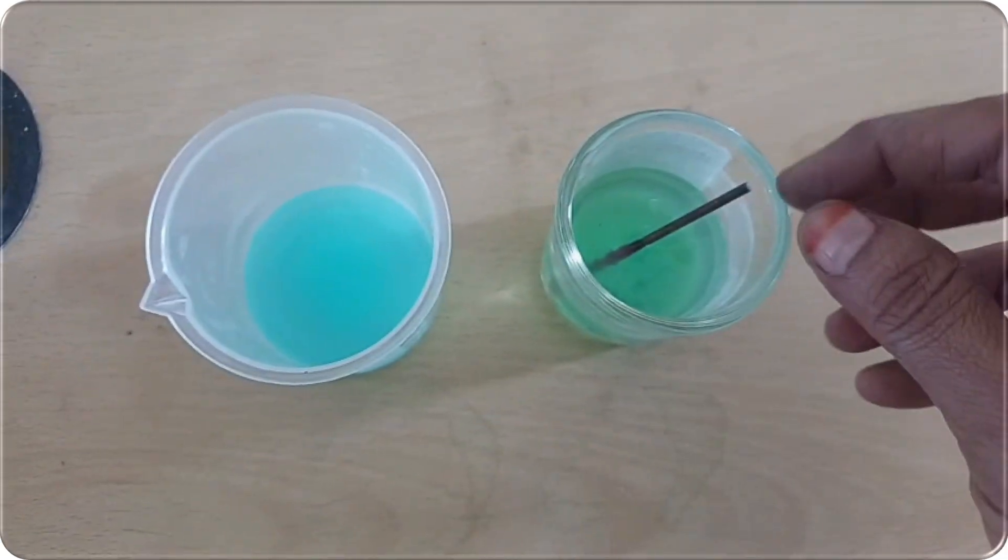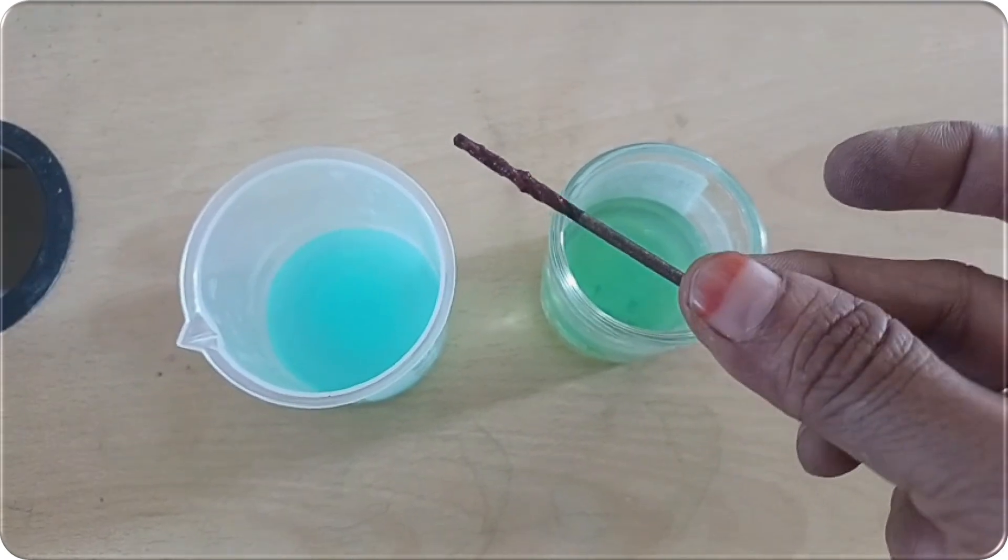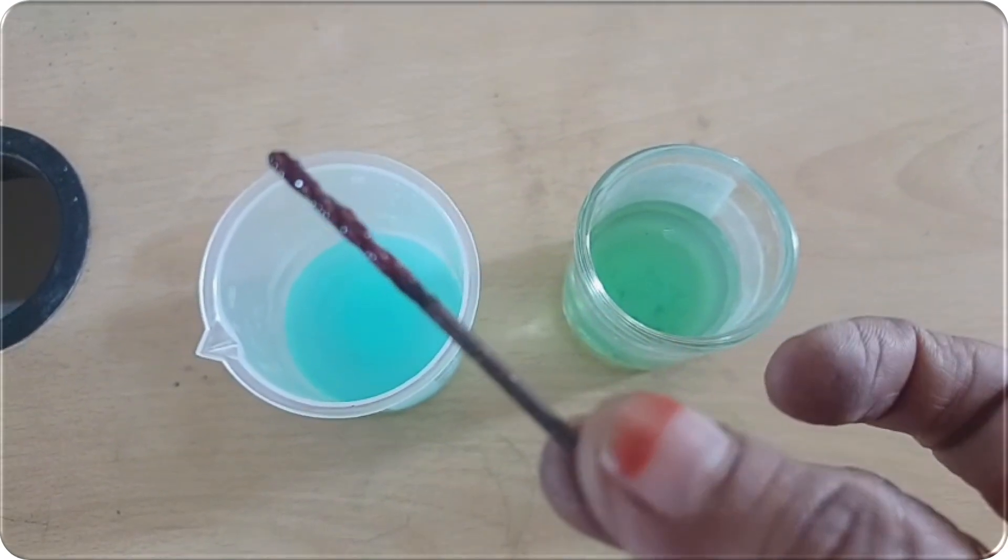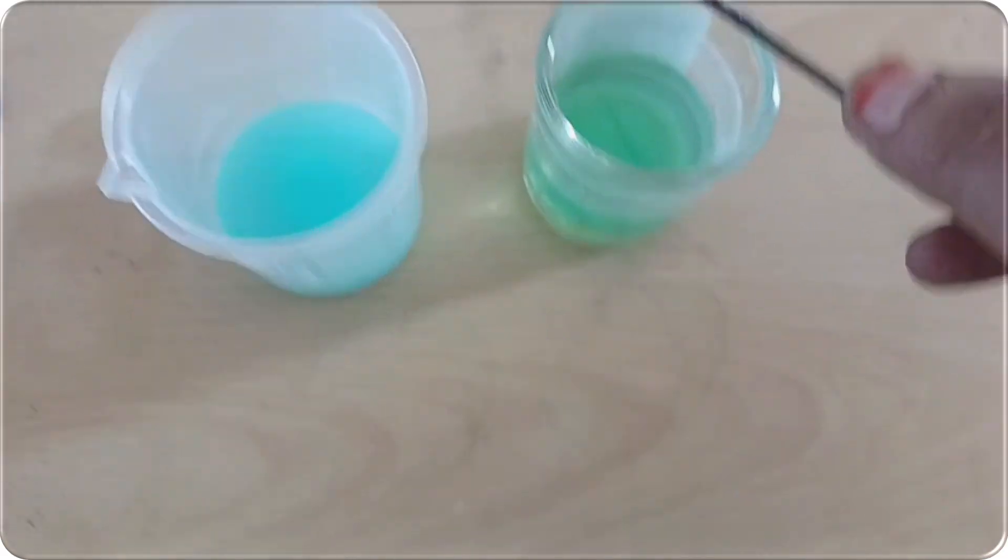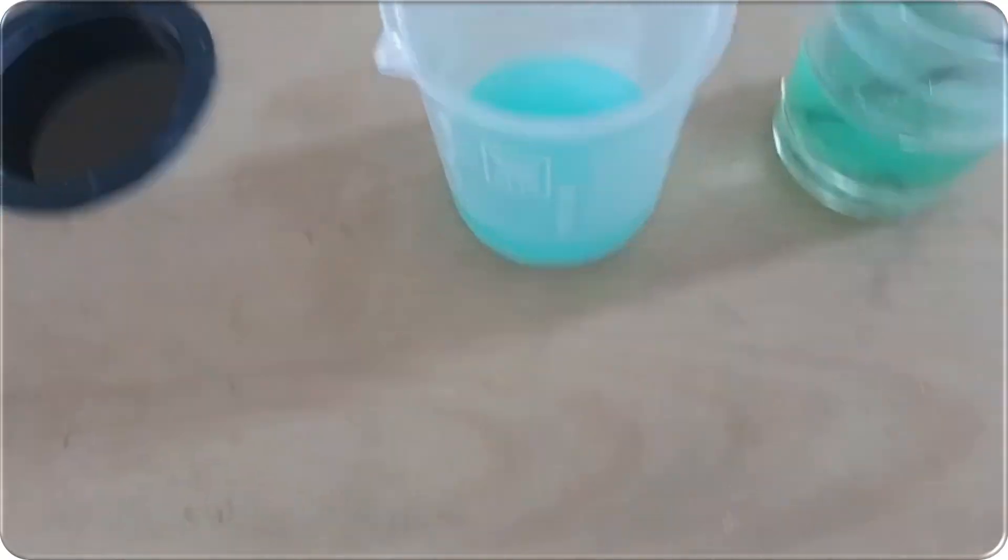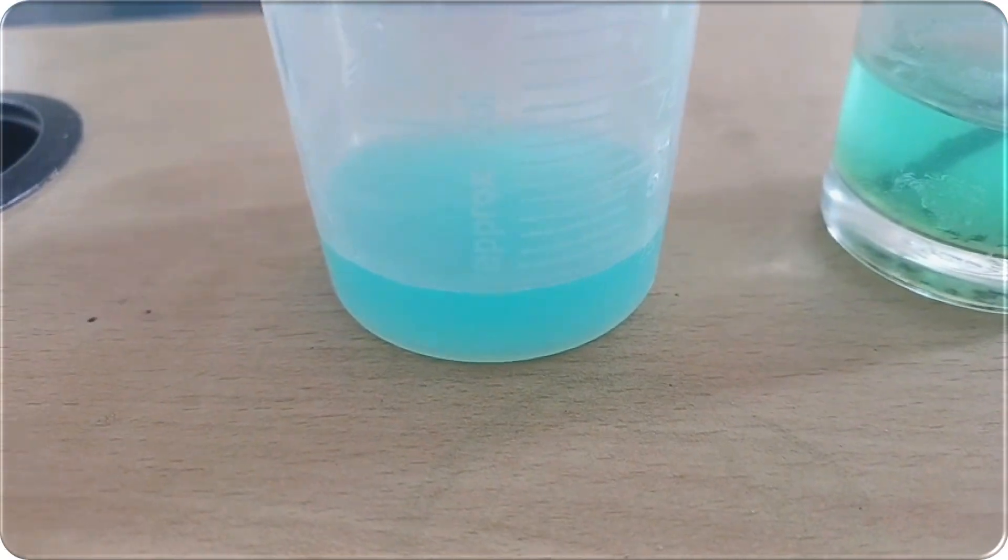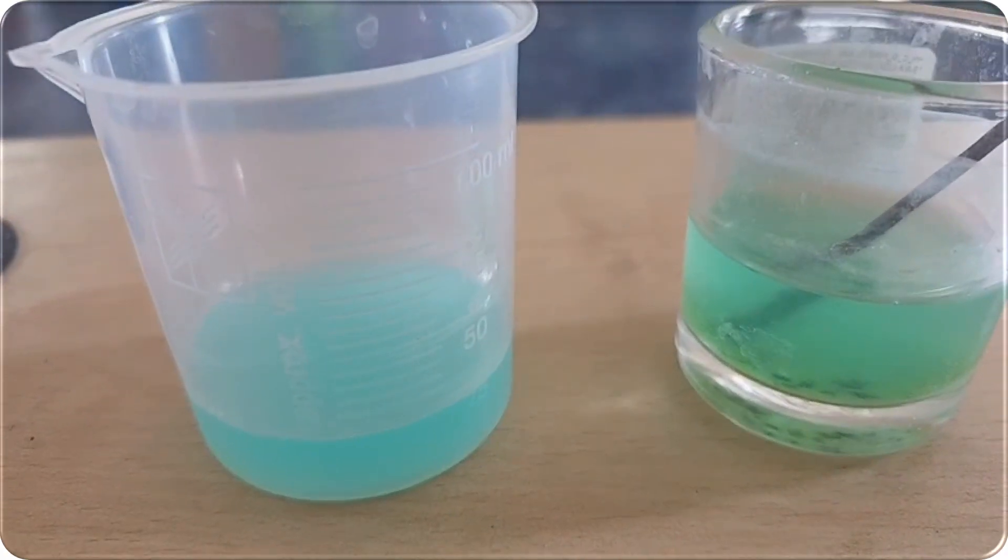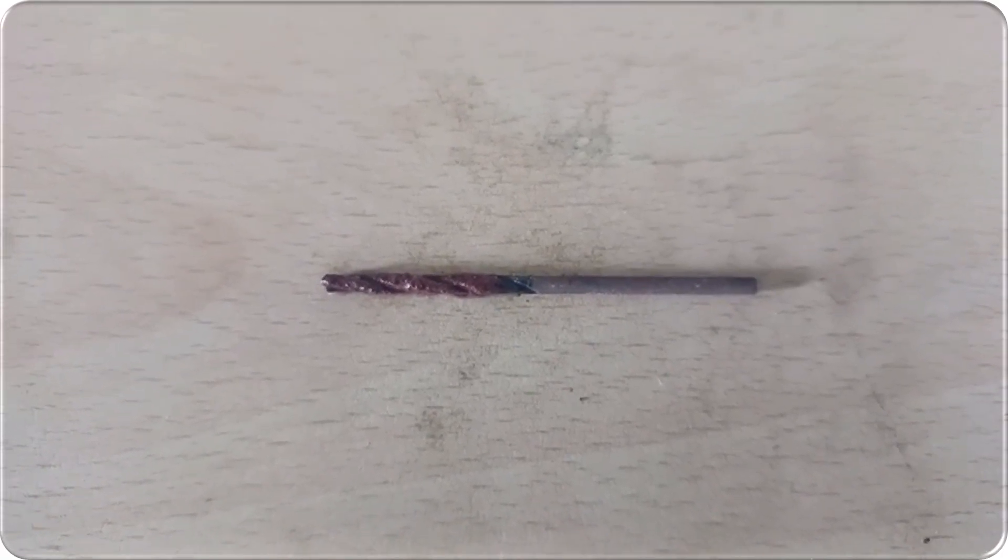Observe the color of the solution. The solution which we kept iron nail changes into green color because copper sulfate changes into iron sulfate and the copper has deposited under iron nail. The brown deposit on the iron nail is copper, a new substance.